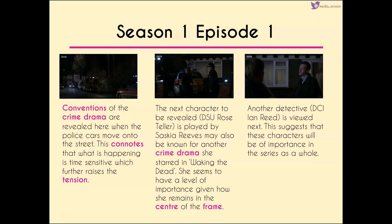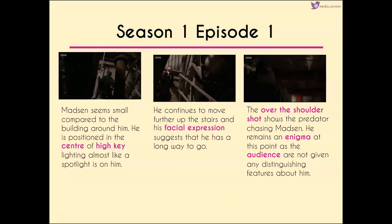We then go back to Madsen, who seems very small compared to the building around him. He's in the center of high-key lighting — everything around him is very dark and full of shadows, but he's placed in the only bit of light, like a spotlight on him. He continues up the stairs; his facial expression suggests he has a long way to go but is getting tired, suggesting again he can't keep running. Another over-the-shoulder shot of Luther as predator chasing Madsen — he still remains an enigma, with no distinguishing features, building tension and suspense.